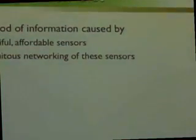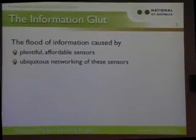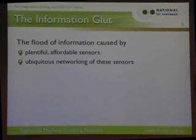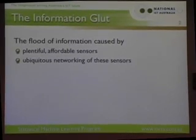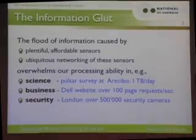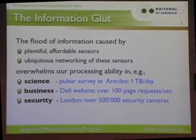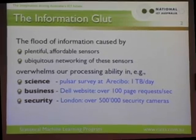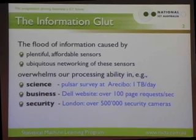I don't think I have to dwell on the fact that we're drowning in a flood of information — you're well aware of that at Google. There are two basic reasons: sensors are becoming more affordable and plentiful, and they're more and more networked. In London, apparently, there are over 500,000 security cameras, and I'm wondering who's watching all that video. It's clear we need automated methods to process this data because we're generating far more than all of humanity can handle manually.